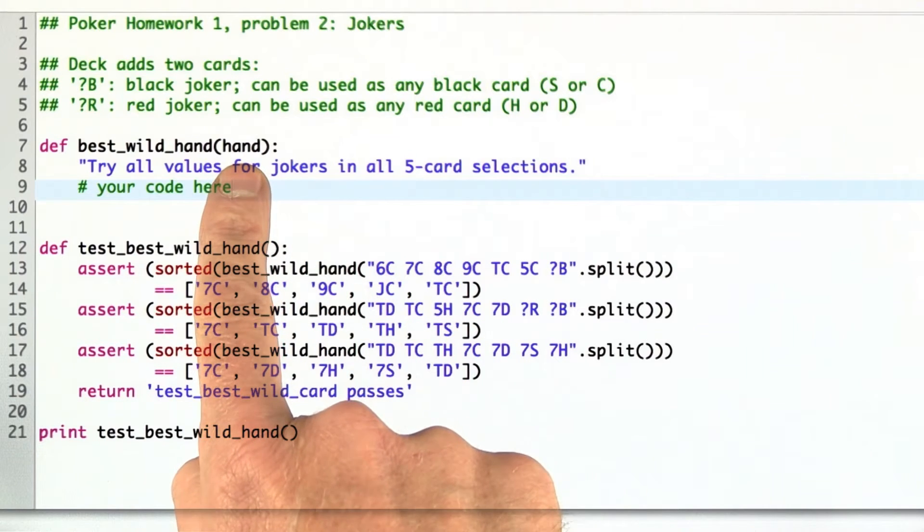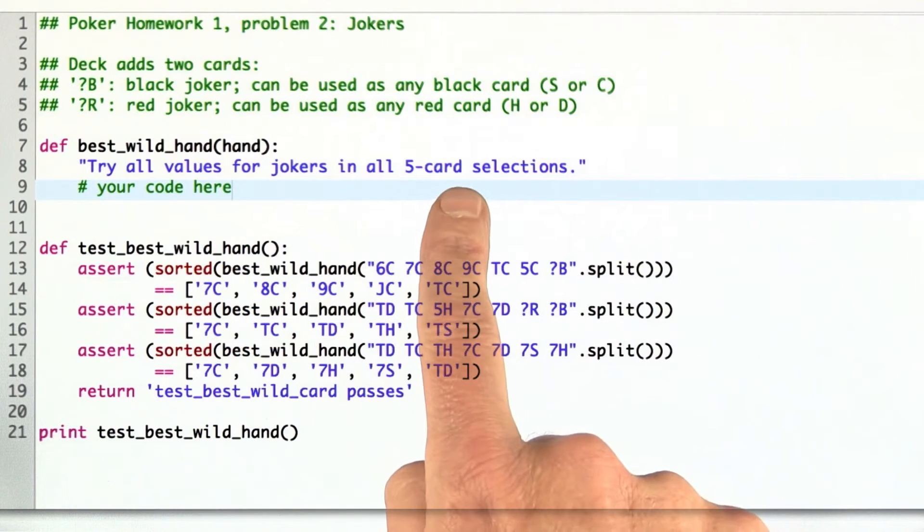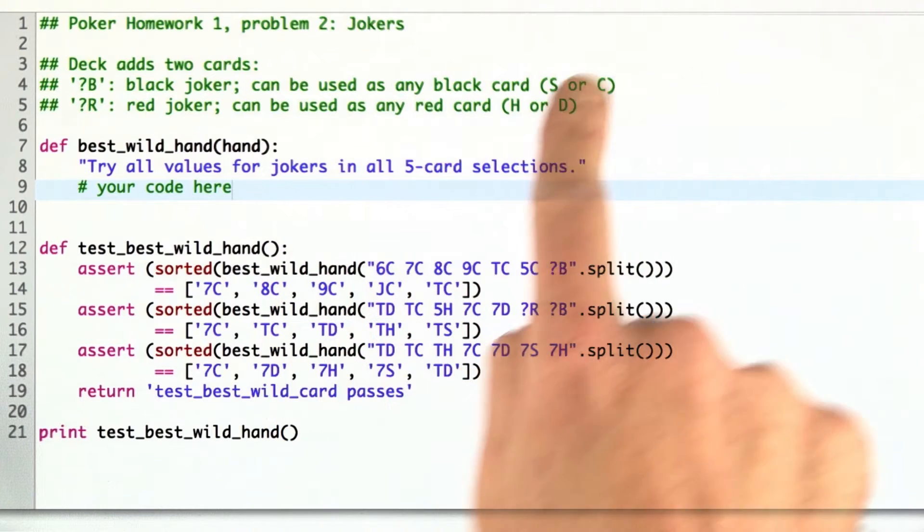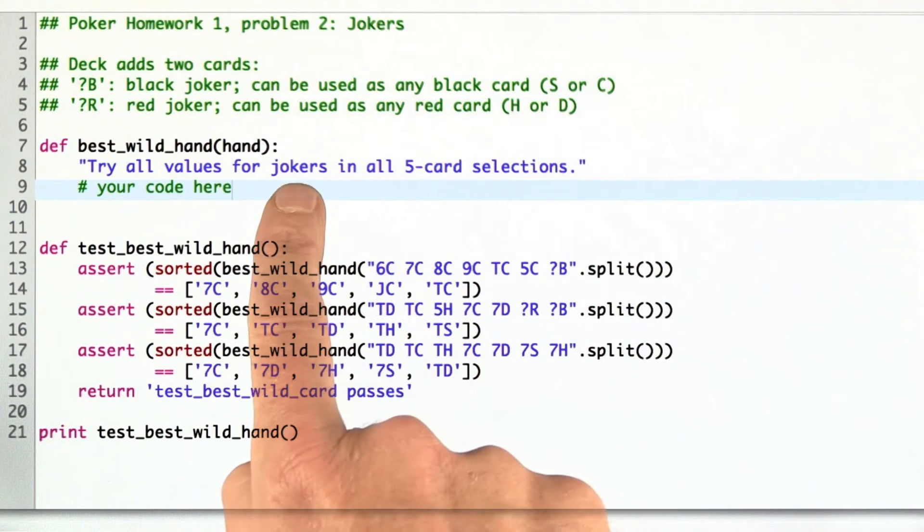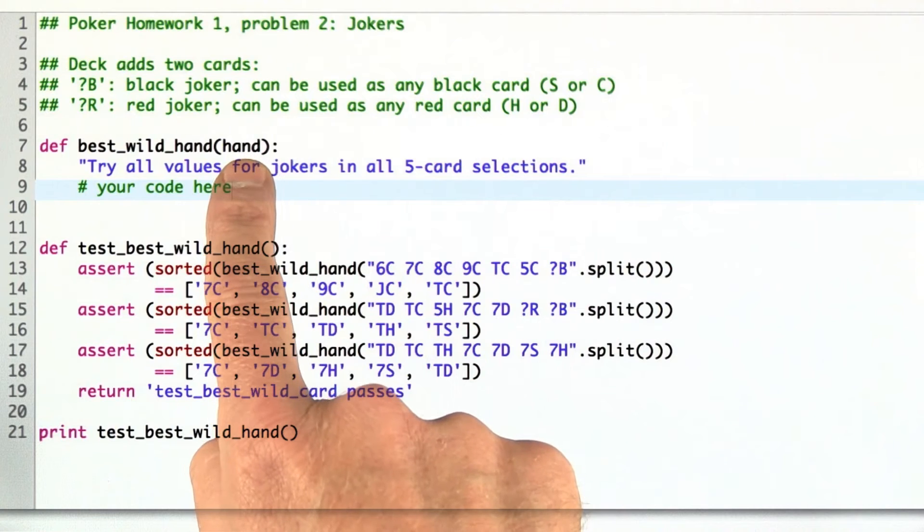Like before, hand might be more than five cards. It could be seven cards. You still have to come up with the best five-card answer that substitutes in one of the appropriate cards for any jokers that exist in the hand.